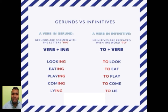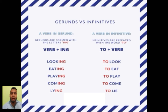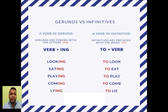For example: look → looking, eat → eating, play → playing, come → coming, lie → lying. On the other hand, verbs in infinitive are prefaced with the word 'to.' Están antecedidos por la preposición 'to.' So we say: to look, to eat, to play, to come, to lie. Esa será la diferencia.